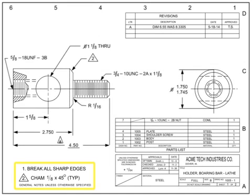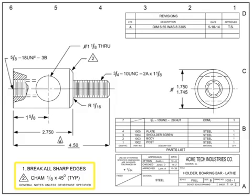The notes list conveys information that the call-outs within the field of the drawing do not. It may include general notes, flag notes, or a mixture of both. Traditional locations for the notes list are anywhere along the edges of the field of the drawing, but most are typically found in the upper left or bottom left corners. General notes apply to the entire drawing — tolerances, general handling or material specs, color specifications, testing requirements, or packaging instructions are examples of general notes.